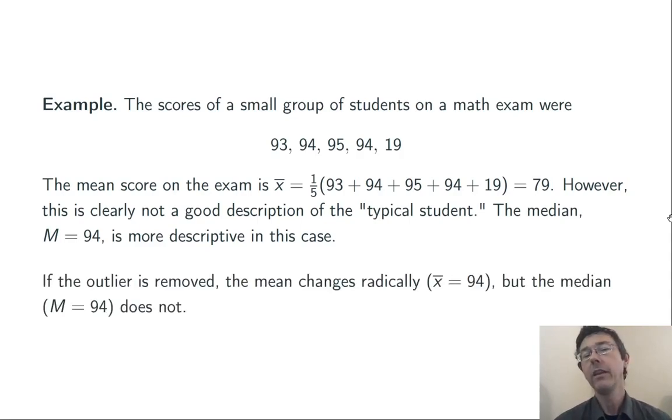One way of seeing the difference between the median and the mean here is by taking out that outlier. If we remove the value 19, the mean changes a great deal. Now the mean is 94. But the median doesn't change at all. It's still 94. Notice, by the way, in this case, the mode of 94 isn't particularly informative. It's really just a coincidence that we had two values at 94 and only one at 93, 95, and 19.